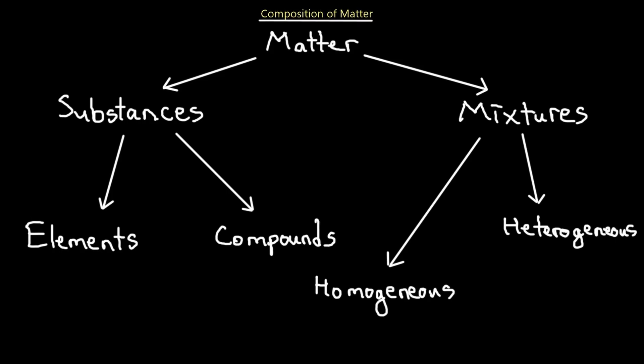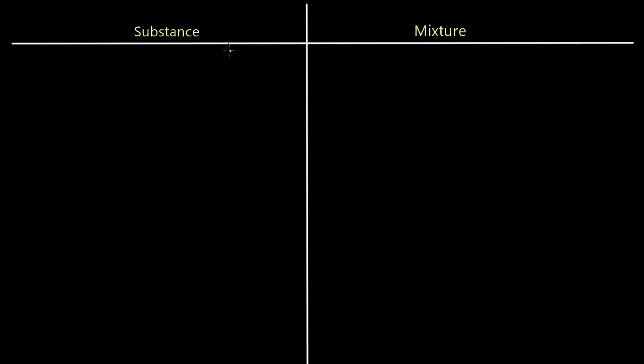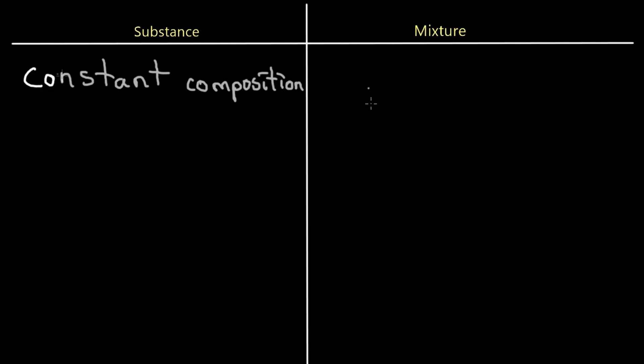We are going to be talking about compounds, elements, and the different types of mixtures on a regular basis, so get familiar with these words. In today's video we're going to go over the definitions of each and their differences. Let's start with substance versus mixture — the first subdivision of matter. A substance is matter with constant composition, whereas a mixture is matter with variable composition.